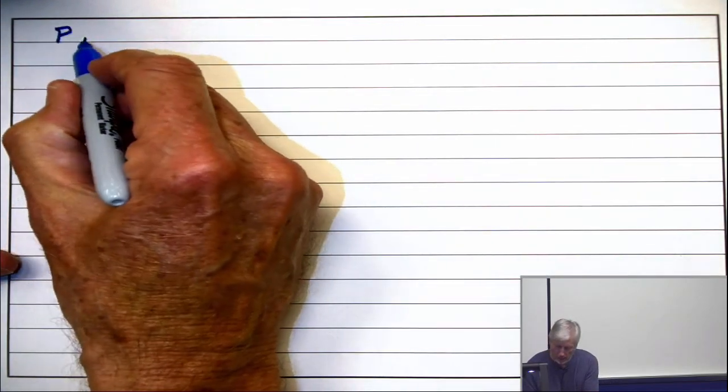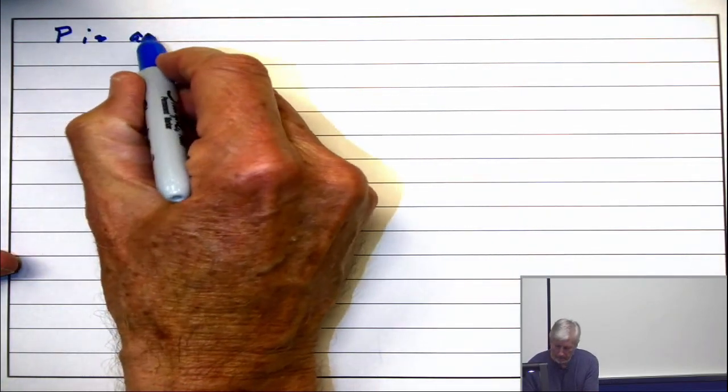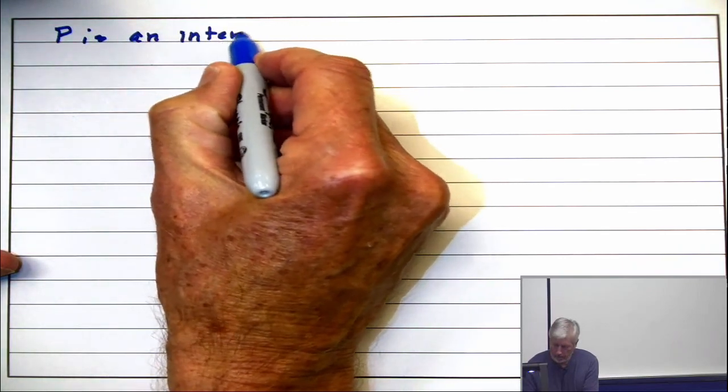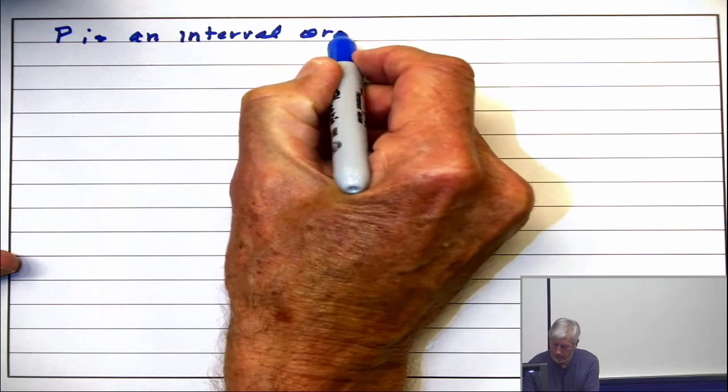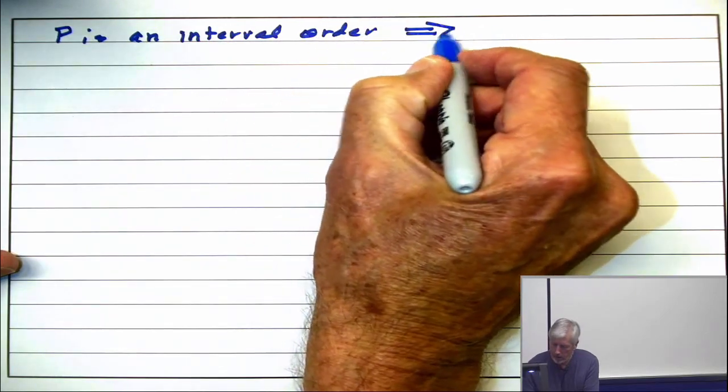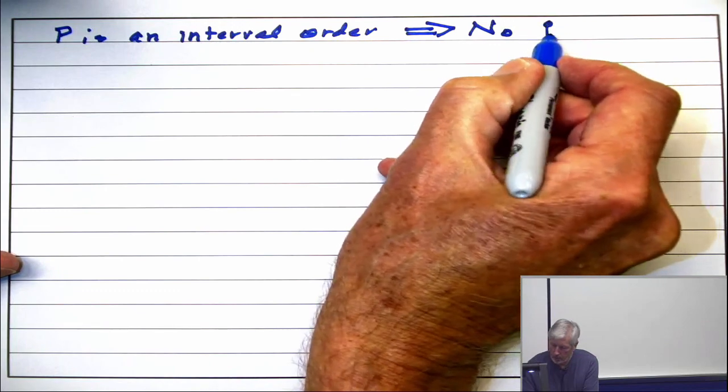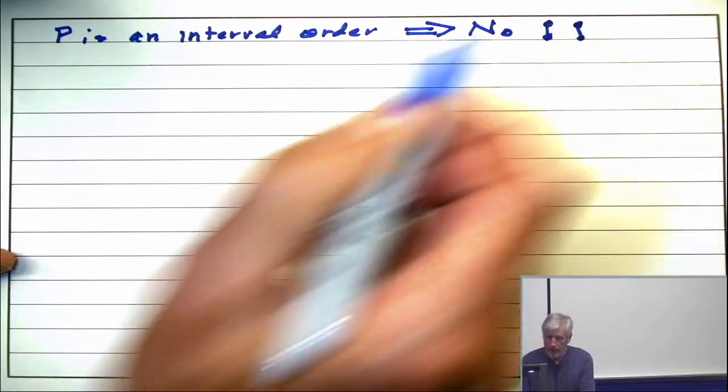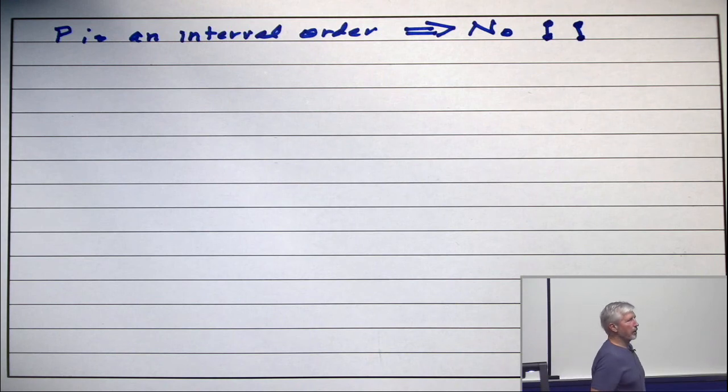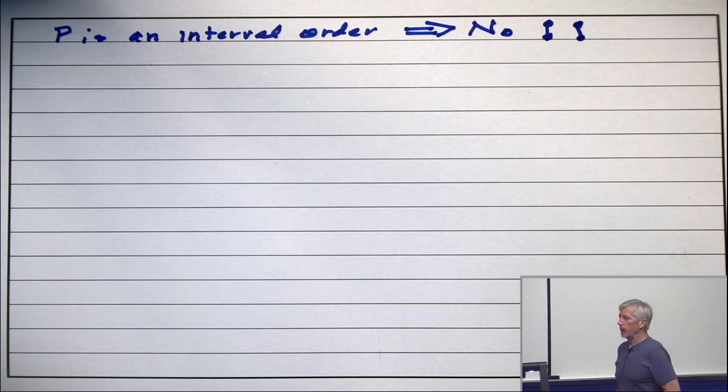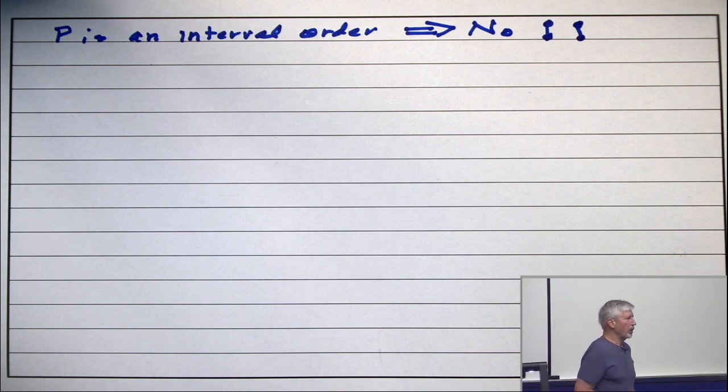One direction is trivial. Let's do the necessity. So P is an interval order implies no 2 plus 2. And let me emphasize that as a sub-poset. This has nothing to do with the diagram. This is a sub-poset. So you cannot find two chains with no elements of one chain comparable with elements of the other. Now, the proof is trivial.